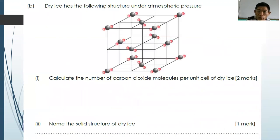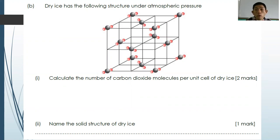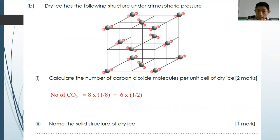Number three: dry ice has a face-centered cubic structure under atmospheric pressure. Calculate the number of CO₂ particles per unit cell. For a face-centered cubic structure, each particle on a face occupies one-half of the face, and there are six faces — giving 6 × ½ = 3. Plus eight corner atoms, each contributing one-eighth — giving 8 × ⅛ = 1. So the total number of particles per unit cell is 4.